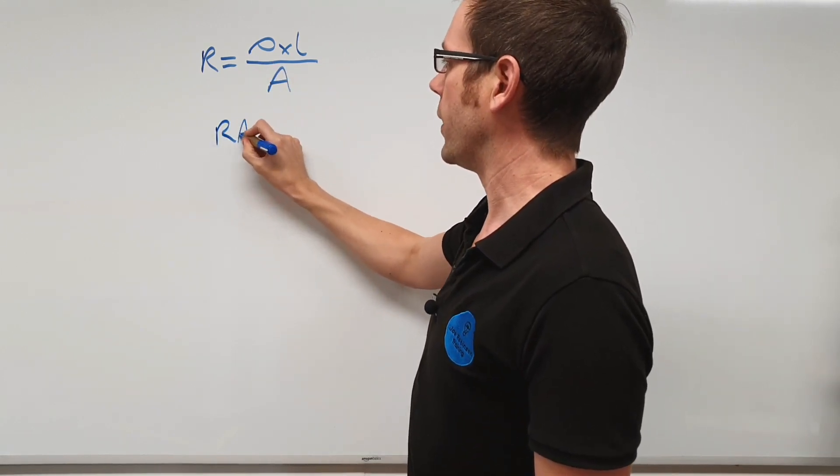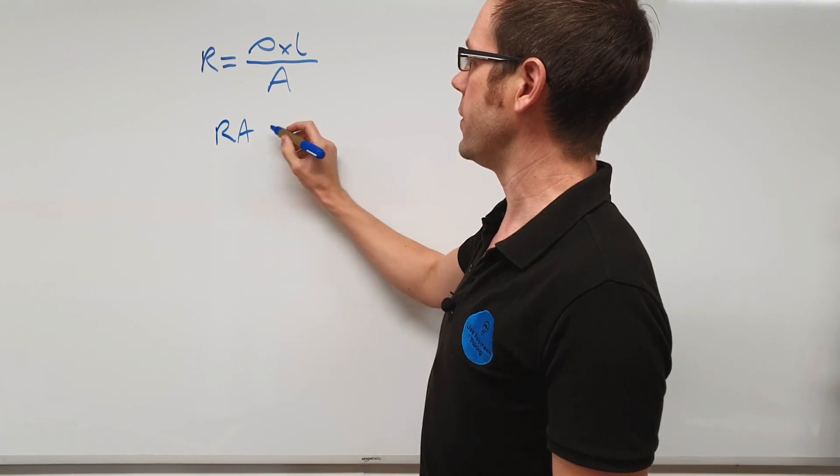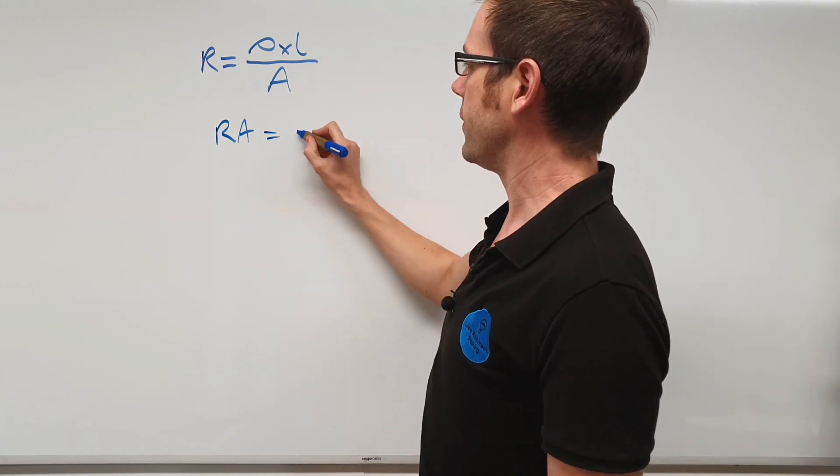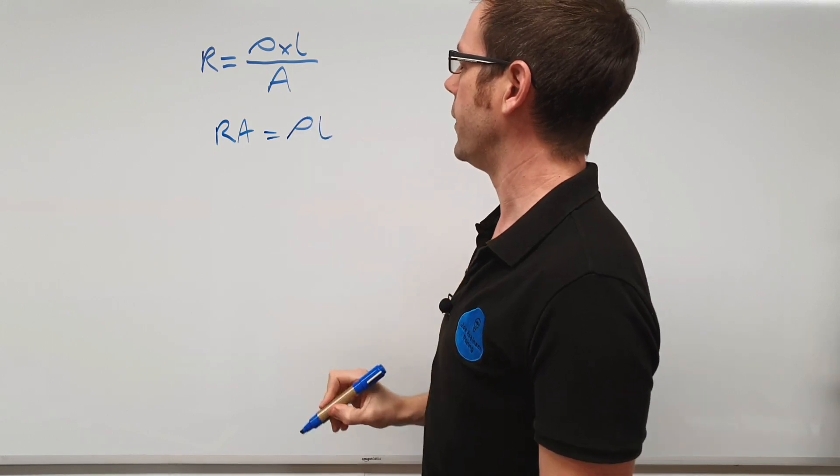If we times both sides by A, we get R times A on this side is equal to, we've divided by A and times by A, so this has disappeared to leave us with rho L like that.